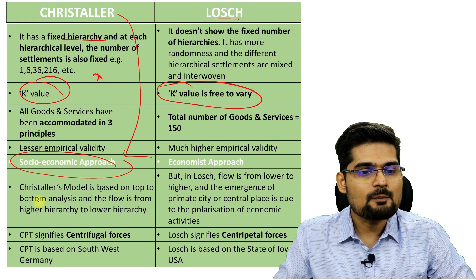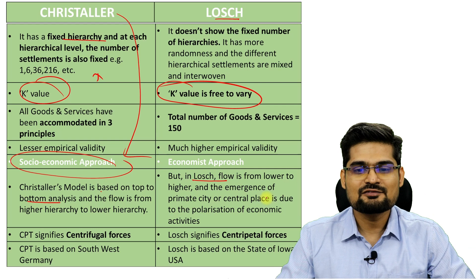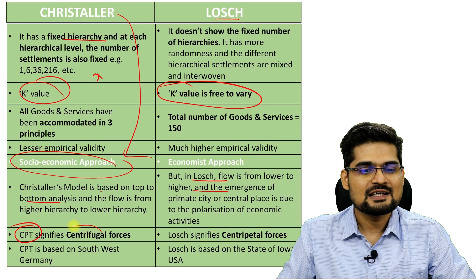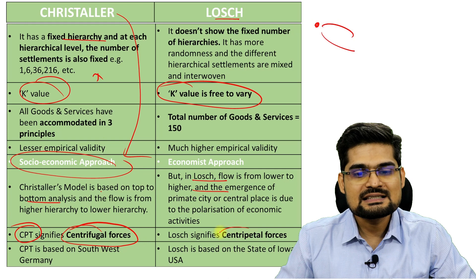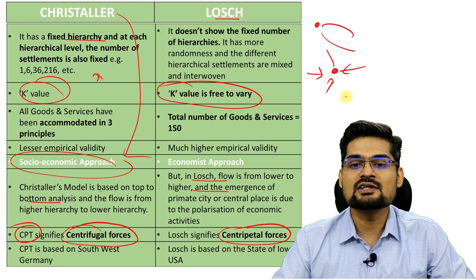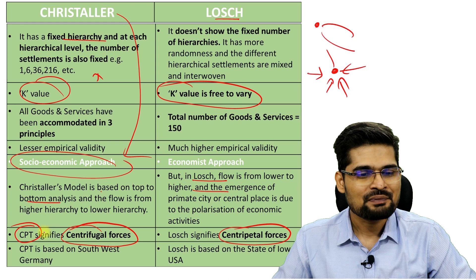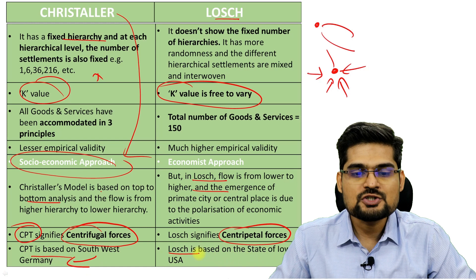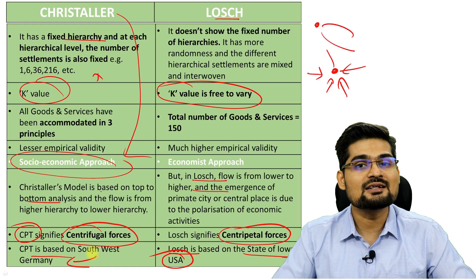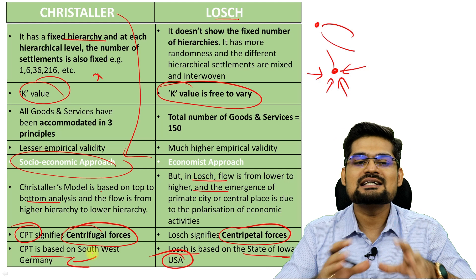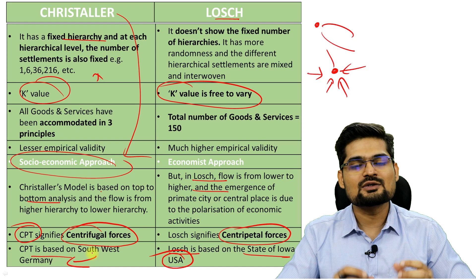Christaller's model is a top-down approach while Lösch's is a bottom-up flow approach. Central place theory is based on centrifugal forces radiating out of the center, while Lösch's model is based on centripetal forces — city functions drawing from outside. Christaller's model is based on southwest Germany, while Lösch's model is based on the state of Iowa in the USA — a clear distinction between US and German cities.